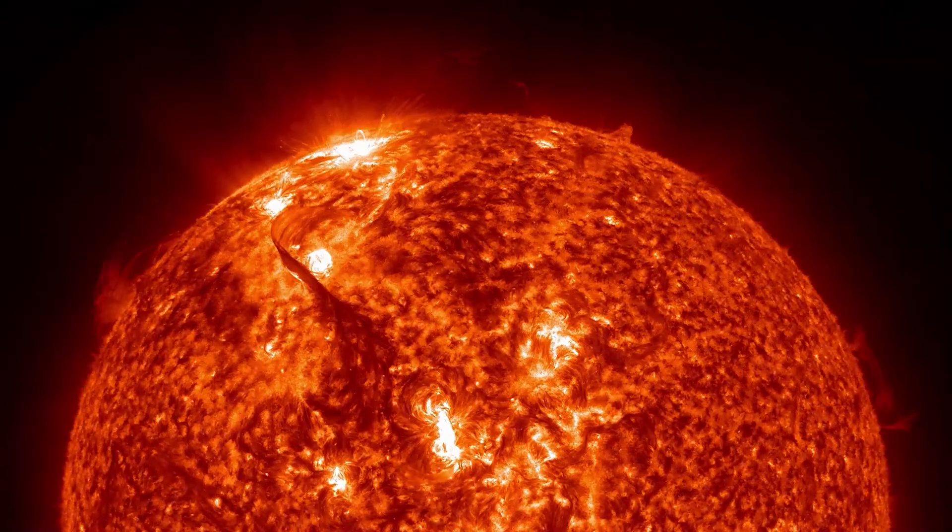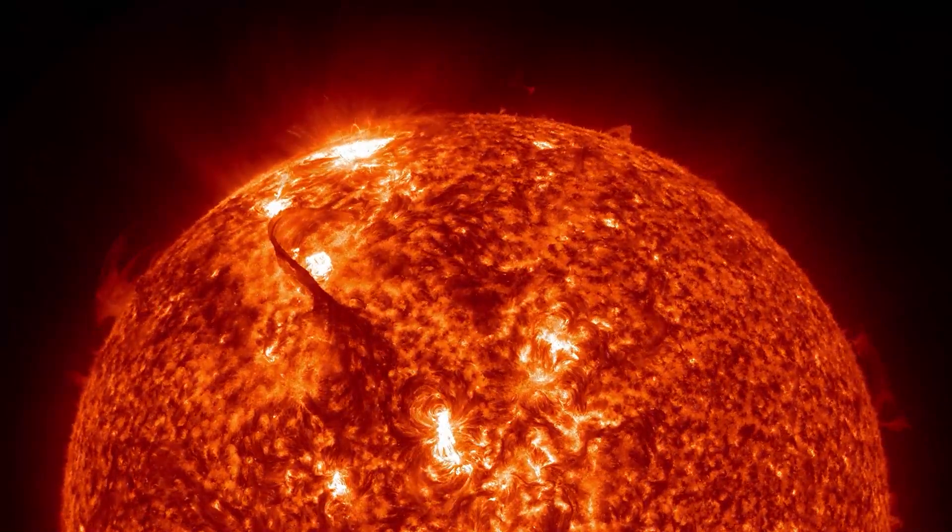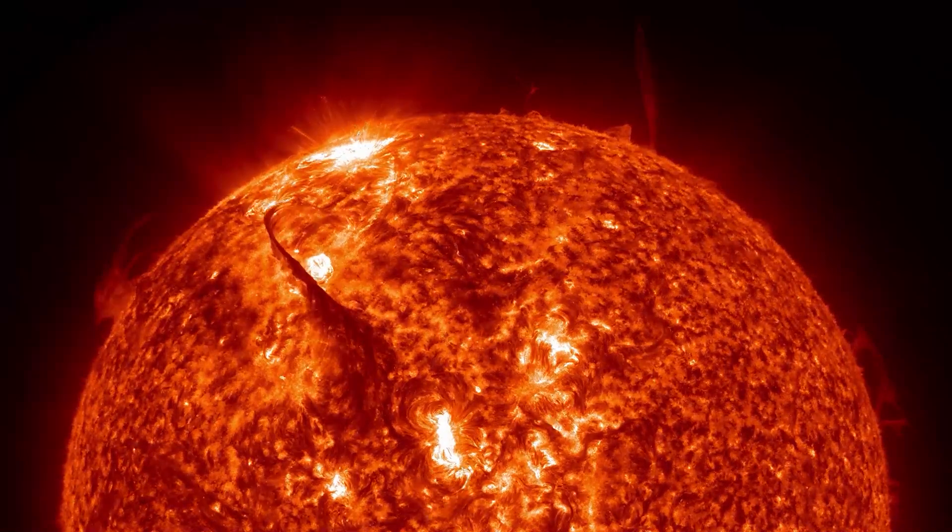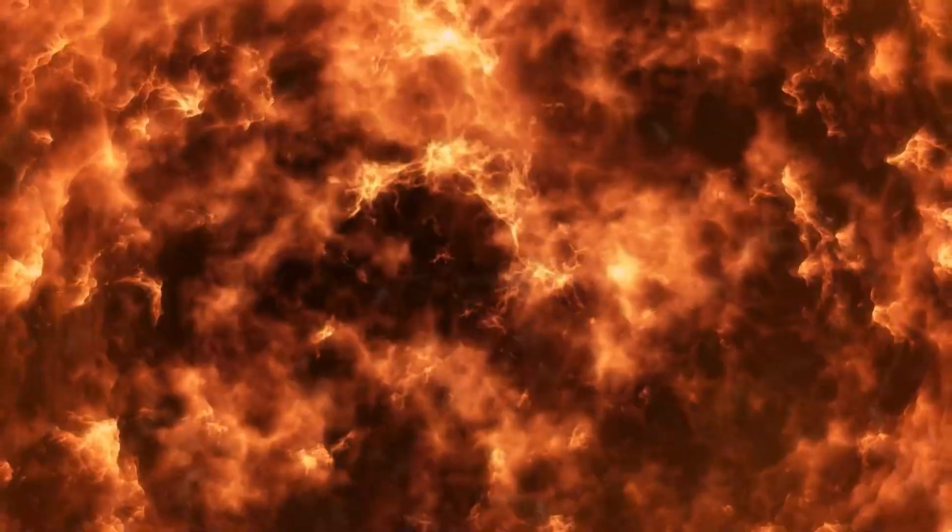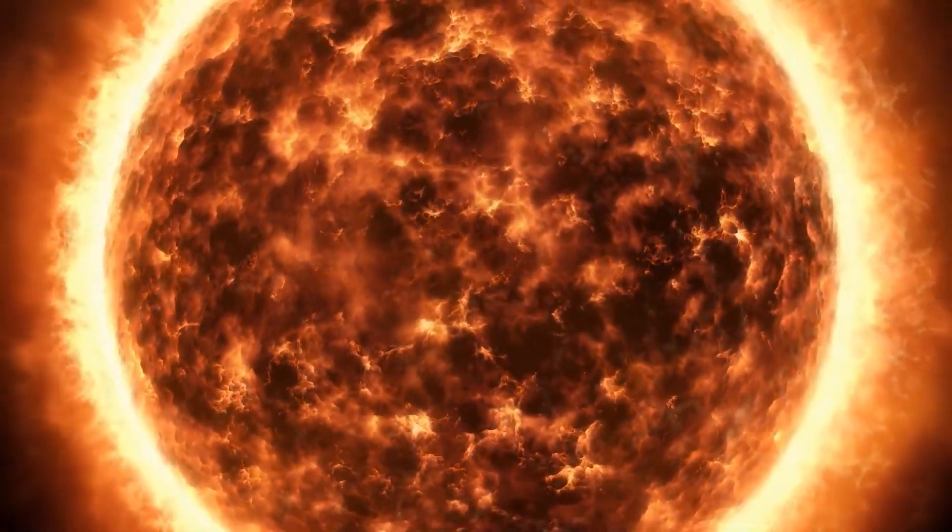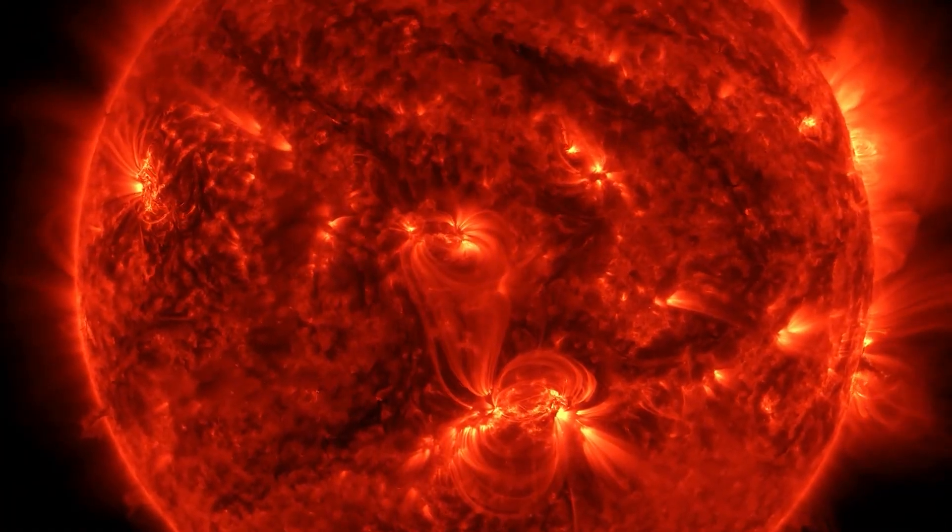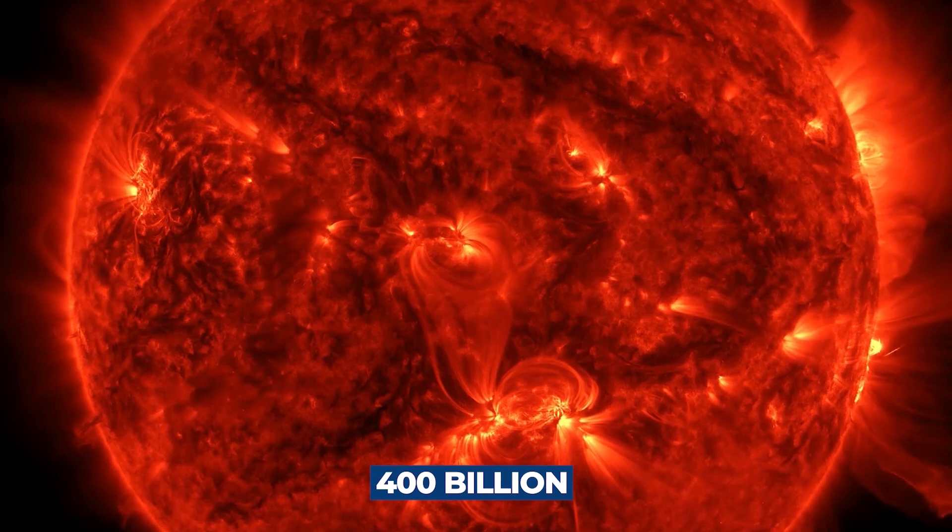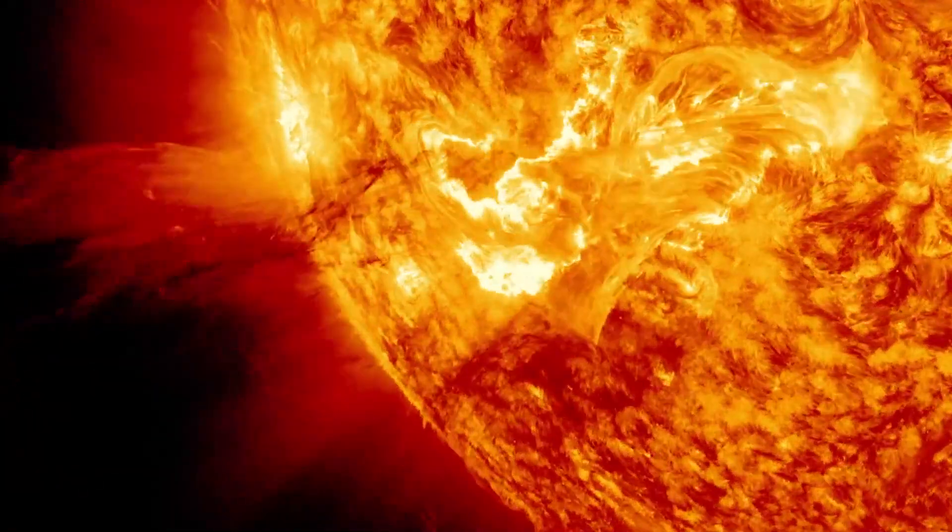On a regular basis, our Sun ejects portions of its thin outer atmosphere, the corona, a phenomenon known as coronal mass ejection. These, however, are orders of magnitude weaker than the events observed on Betelgeuse. The surface mass ejection from Betelgeuse released 400 billion times more mass than a typical coronal mass ejection from our Sun.